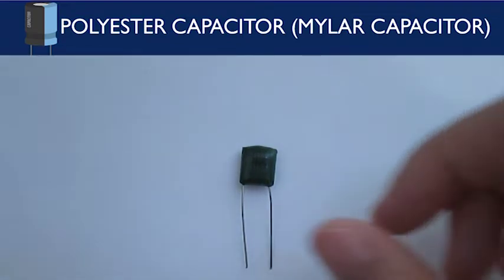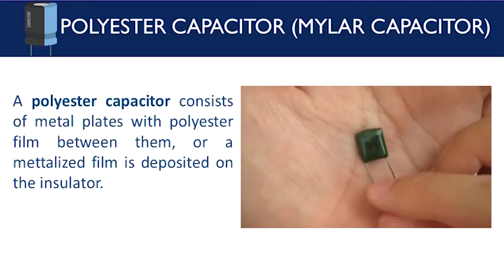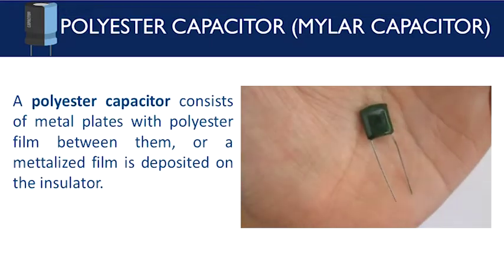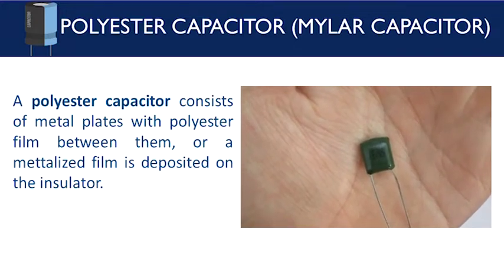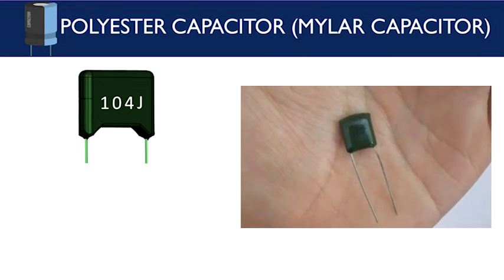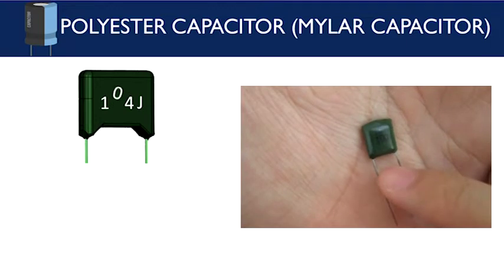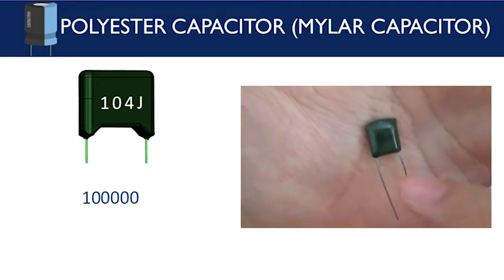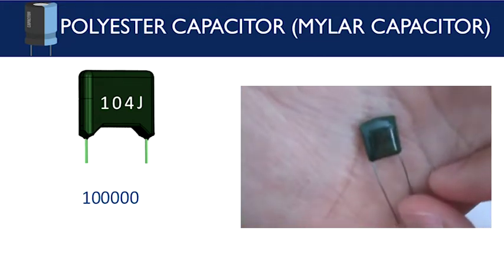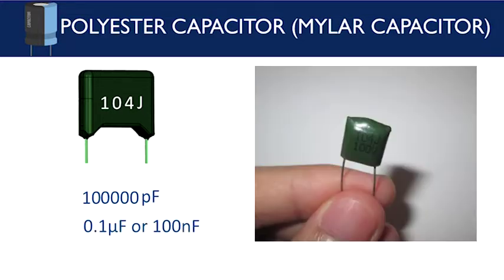The third most common type is the polyester capacitor, also commonly called a mylar capacitor. It consists of metal plates with polyester film between them, or a metalized film deposited on the insulator. We can read its capacitance from the digits on its body — the first two digits are 1 and 0, and the third digit 4 means we add four zeros, giving 100,000 picofarad or 0.1 microfarad. There is also a letter J after the third digit, which represents the tolerance value of ±5%. For a detailed discussion on how to read capacitor values, I've attached links in this video's description.